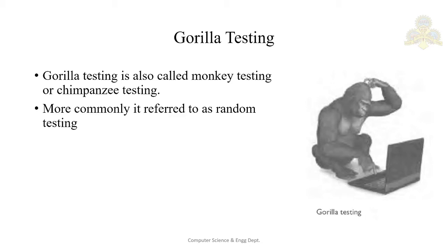The software should not misbehave when wrong inputs are given; if it fails, the user will lose confidence in it. Gorilla testing is used to check whether defensive programming has been done. With defensive programming, wrong inputs should also generate proper error messages, making the software more tolerant of wrong inputs.